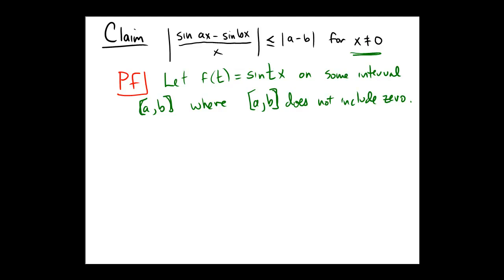Since the function sine tx is both continuous and differentiable on that interval, the mean value theorem implies that there is a c in the interval from a to b with f'(c) equaling f(b) minus f(a) all over b minus a.